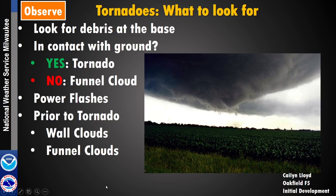With tornadoes, one of the things to look for is debris at the base of where the rotation is. This is the initial development of the Oakfield tornado — you can kind of make it out on the horizon where there's some dust getting kicked up. That means the circulation from the storm is making it down to the ground, and at that point it is technically considered a tornado. If the circulation is at the base of the cloud but you're not seeing debris or a condensation funnel reaching the ground, that would be considered a funnel cloud instead of a tornado, so know the difference when reporting.